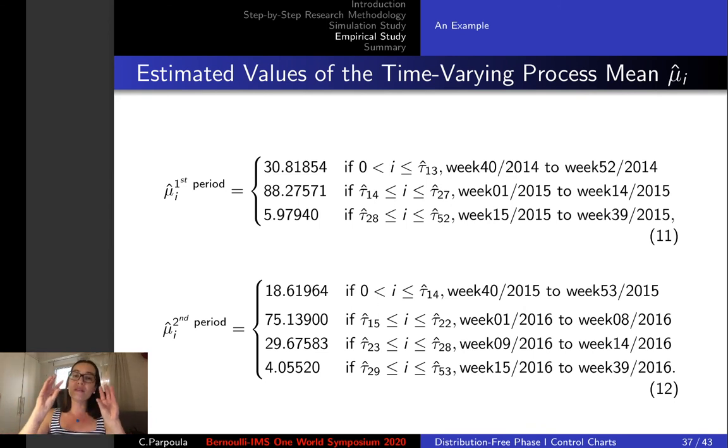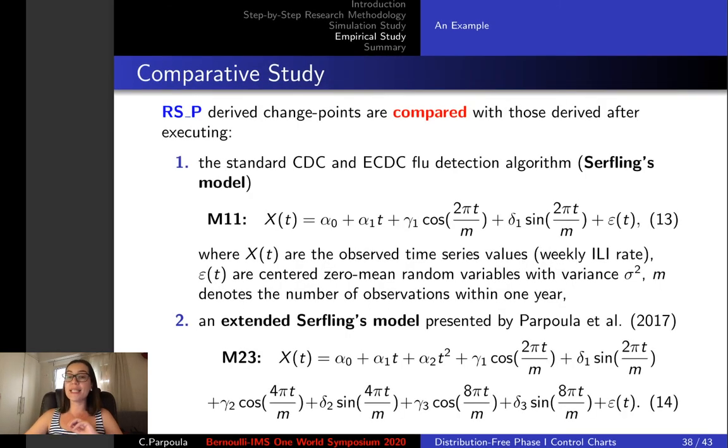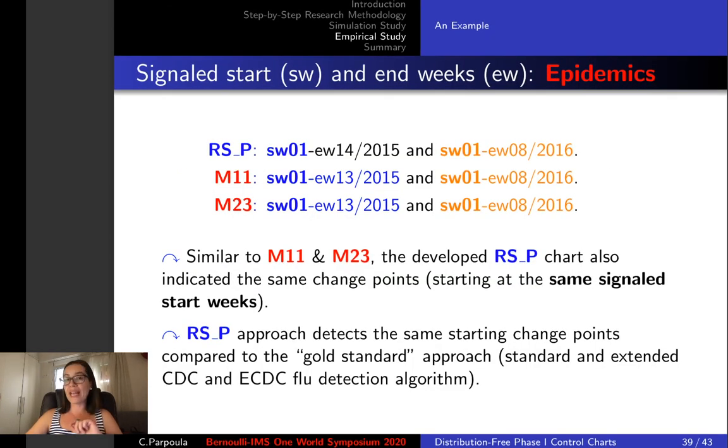However we compared this change point with those derived after executing the standard CDC and ECDC flu detection algorithm. This is Serfling's model denoted by M11 and an extended form of it denoted by M23.